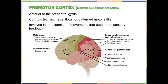Then you get to the premotor cortex — it's just in front of the primary motor cortex. This helps you do learned, repetitious, or patterned motor skills — think typing, texting, things you do mostly with your hands that you tend not to think about. We'll also talk about how the premotor cortex communicates with the cerebellum, which has to do with the incorporation of sensory feedback.